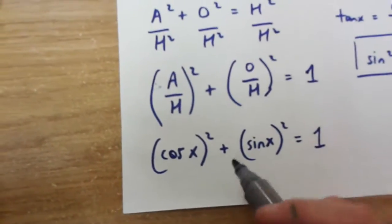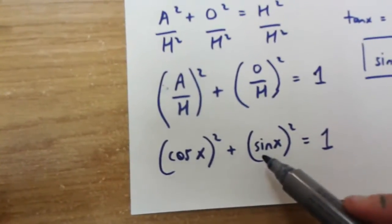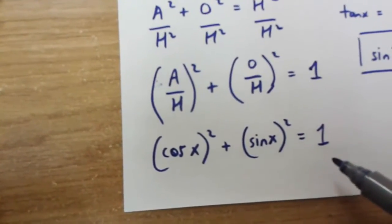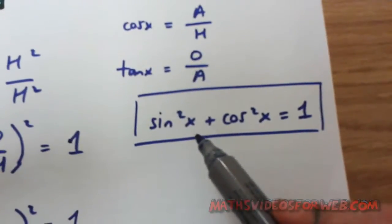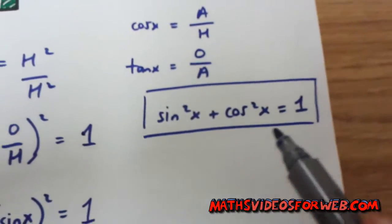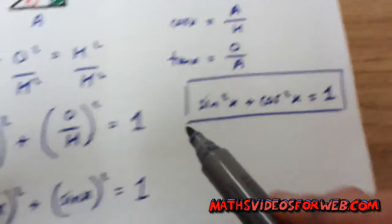So what we get is cos x squared plus sin x squared is equal to 1. We've proven that sin x squared plus cos x squared is equal to 1 without using the unit circle.